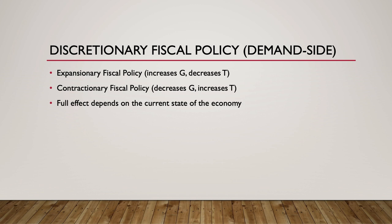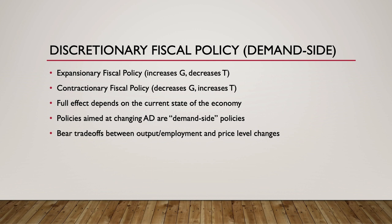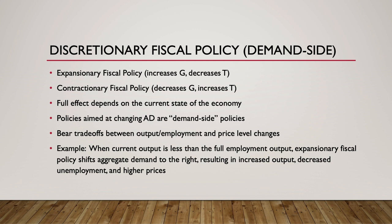The effects of expansionary or contractionary fiscal policy depend on the current state of the economy. Policies aimed at increasing or decreasing aggregate demand are known as demand-side policies. Demand-side fiscal policies bear trade-offs between output and unemployment and changes to the price level. For example, if a country is currently producing output below full employment output with high levels of unemployment, expansionary fiscal policy can shift aggregate demand to the right, resulting in increased output, decreased unemployment, and higher prices.